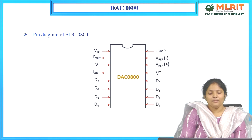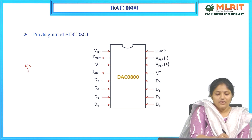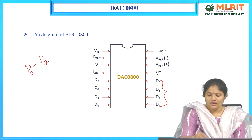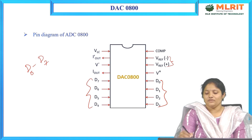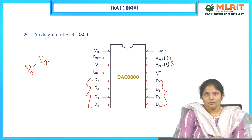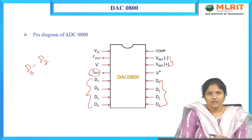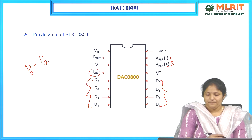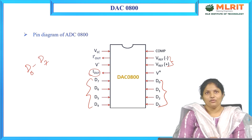Regarding the pin configuration of the DAC0800: since it is an 8-bit DAC, it has digital inputs D0 to D7 — four bits on each side, totaling 8-bit inputs. Reference voltages are provided to determine the output. The output is I-out (current), and to convert to voltage, an op-amp is used in the interfacing circuit to obtain V-out.